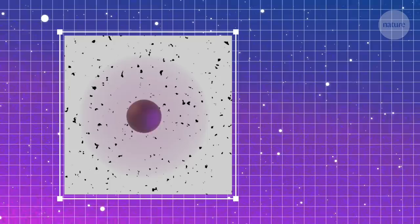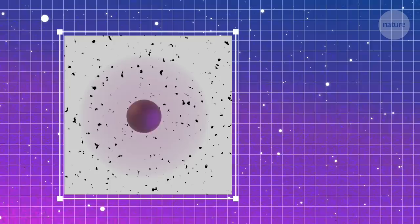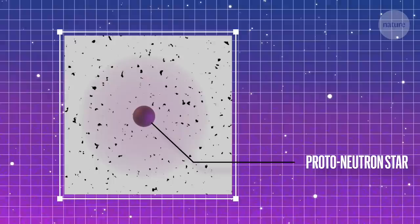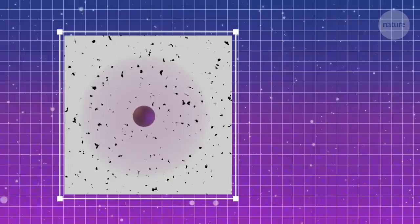Matter from the core then collapses inwards even further. In mere milliseconds, a burst of neutrinos is released as protons and electrons are compressed so tightly that they combine to form a proto-neutron star as dense as the nucleus of an atom.